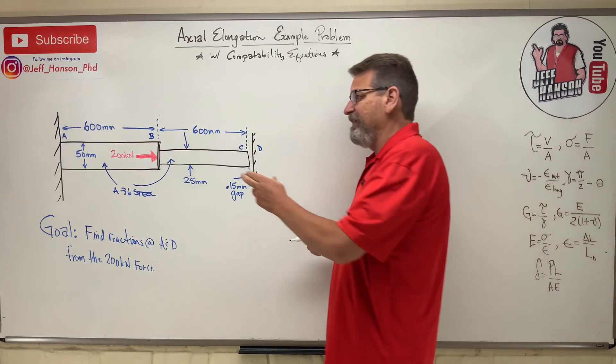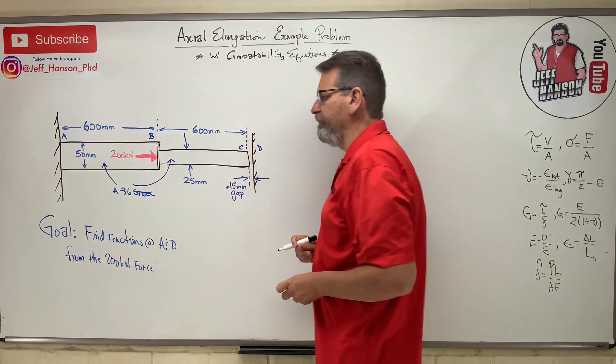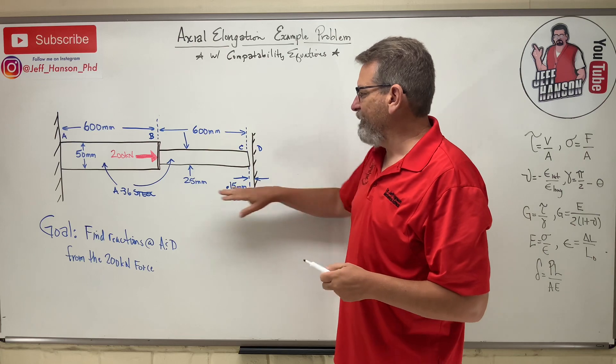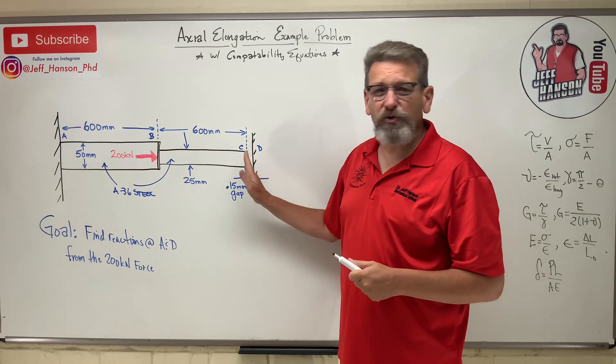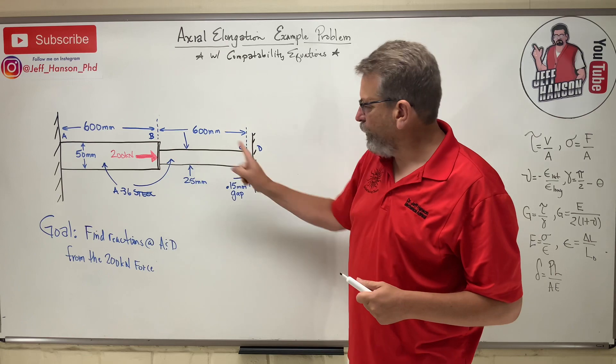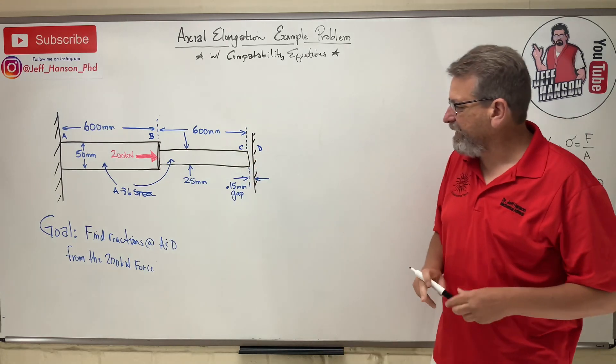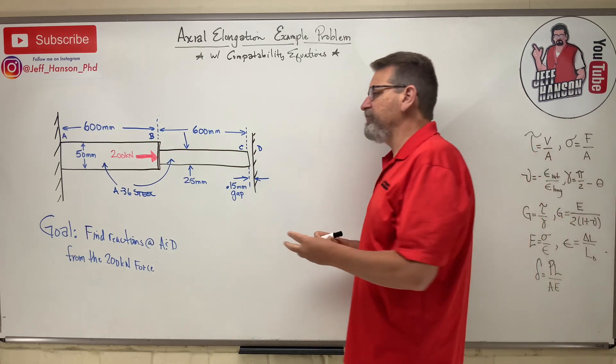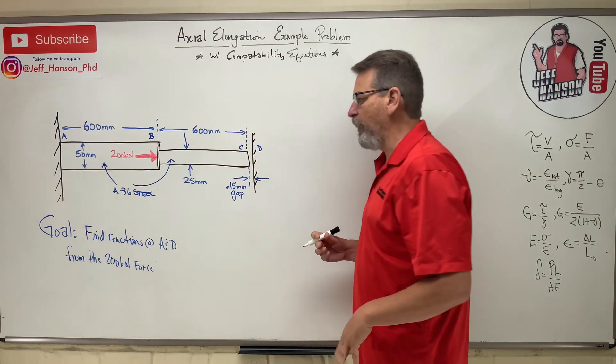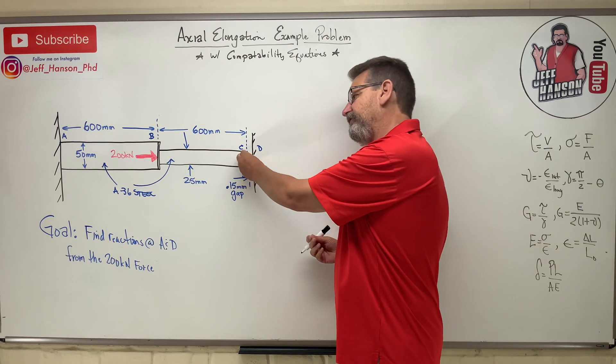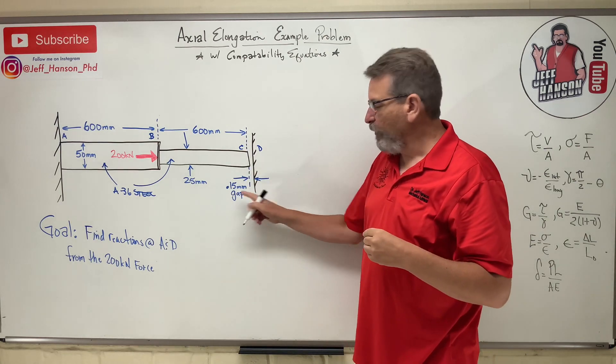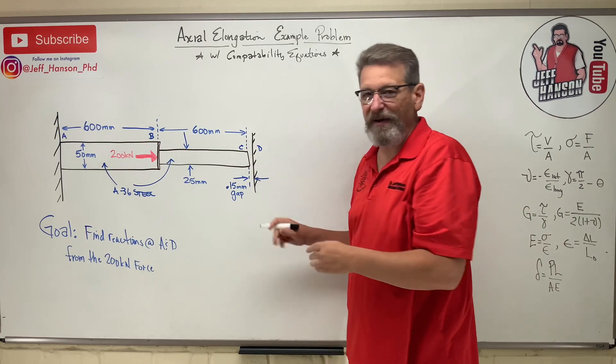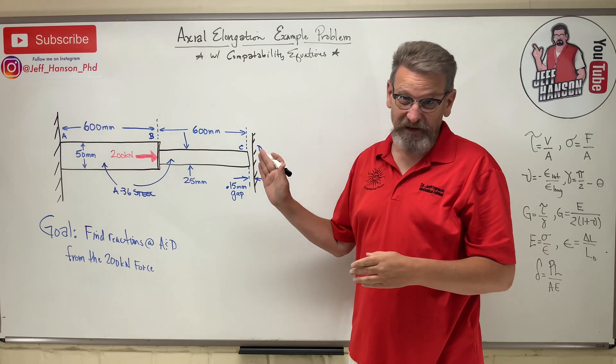We have a column here or two bars of different diameters and they're made of A36 steel, both of them. They're in between two walls. They're rigidly fixed on one end, but this end there's an air gap between the bar and the wall. So when this 200 kilonewton force gets applied to that bar, we think that it's going to close up that air gap of 0.15 millimeters. It's very small. It's going to close that air gap and then this wall is going to prevent it from moving any farther.